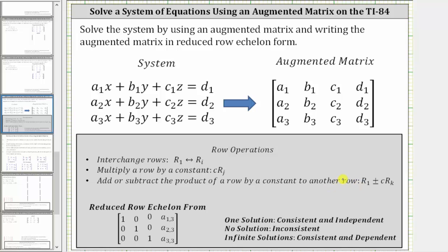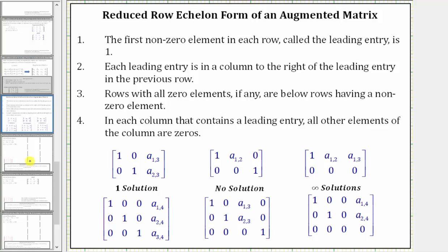Let's also review reduced row echelon form. Because we have a three by four augmented matrix, the reduced row echelon form will fit one of these three forms: this form if we have one solution, this form if we have no solution — notice how the last row is zero, zero, zero, one — and this form if we have infinite solutions, where we have an entire row of zeros.